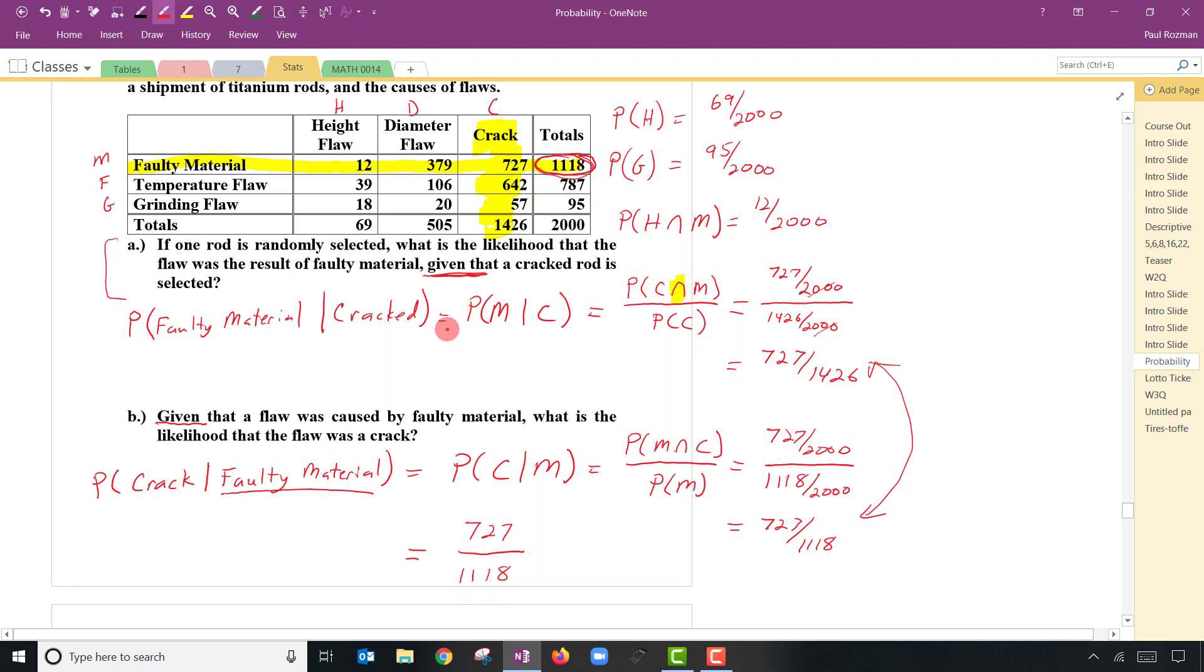Same with the previous one. And in this one, we know that we're in the cracked column. So I know that that's my total. And then what part am I asking for? Material. So you don't have to necessarily figure these out each time. I think you can jump right to the answer. Just know that given tells you the total.